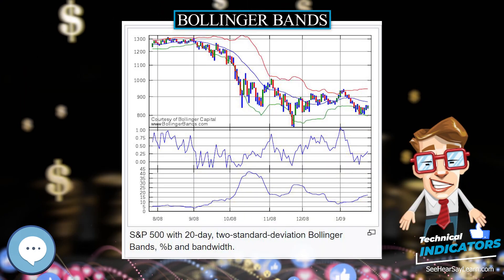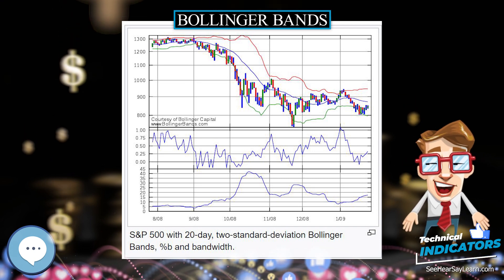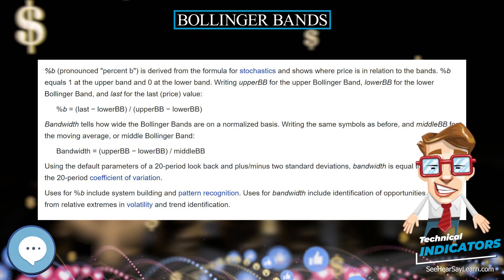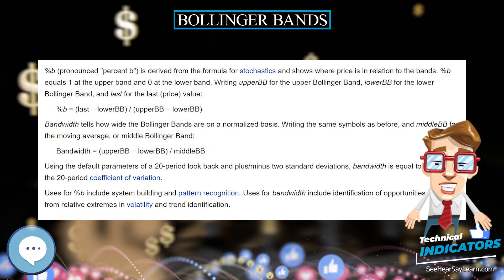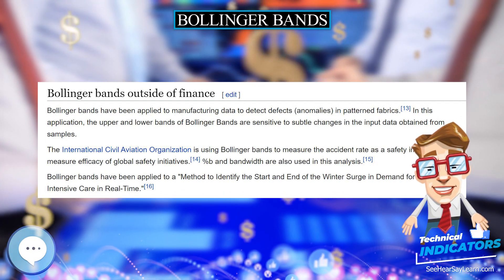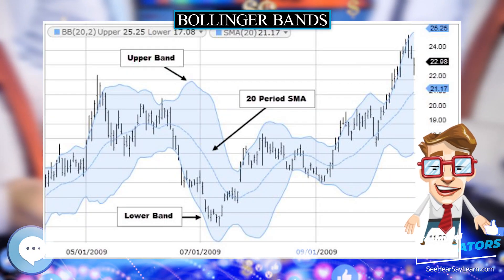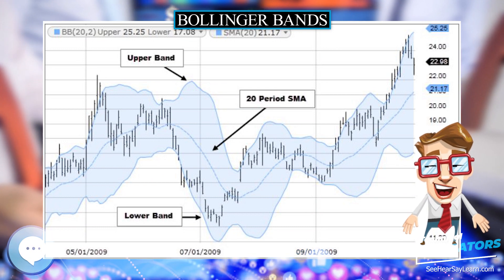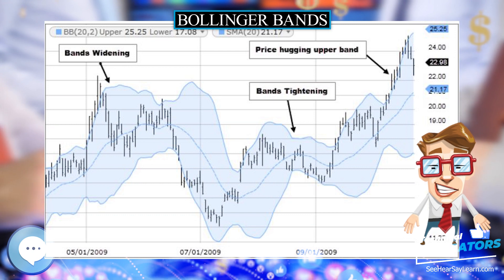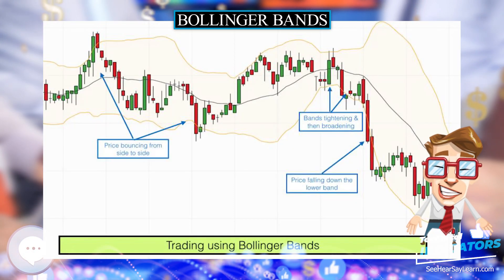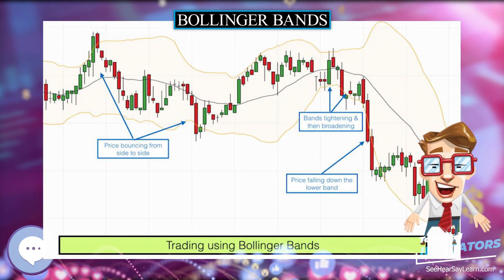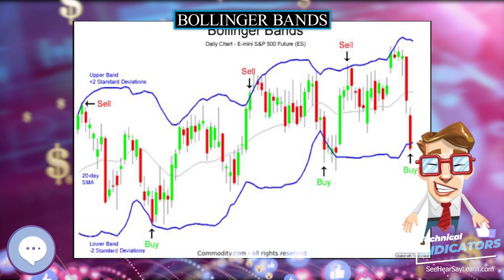Bollinger Bands display a graphical band — the envelope maximum and minimum of moving averages, similar to Keltner or Donchian channels — and volatility, expressed by the width of the envelope, in one two-dimensional chart. Two input parameters chosen independently by the user govern how a given chart summarizes the known historical price data, allowing the user to vary the response of the chart to the magnitude and frequency of price changes, similar to parametric equations in signal processing or control systems.